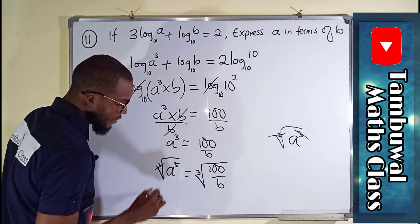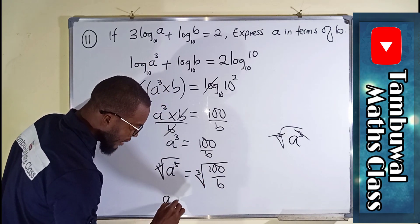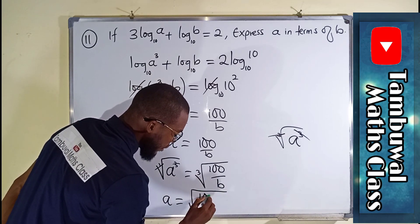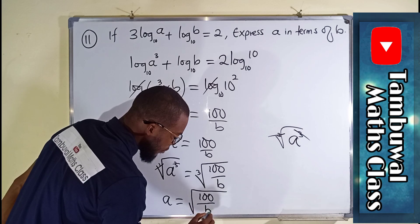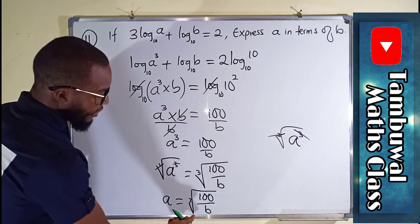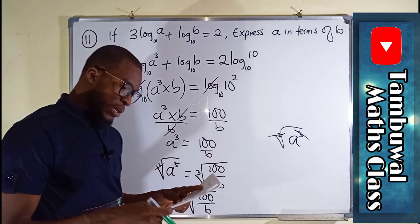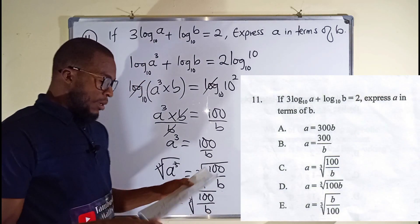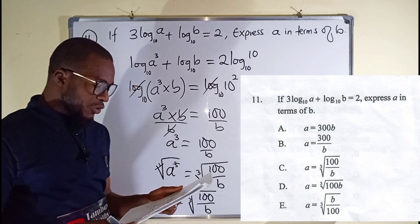This will cancel this, leaving only A, finally, equals the cube root of 100 divided by B. This is cube root. So lastly, this is our answer, and I think it is option C here. Let us now look on to question number 12.